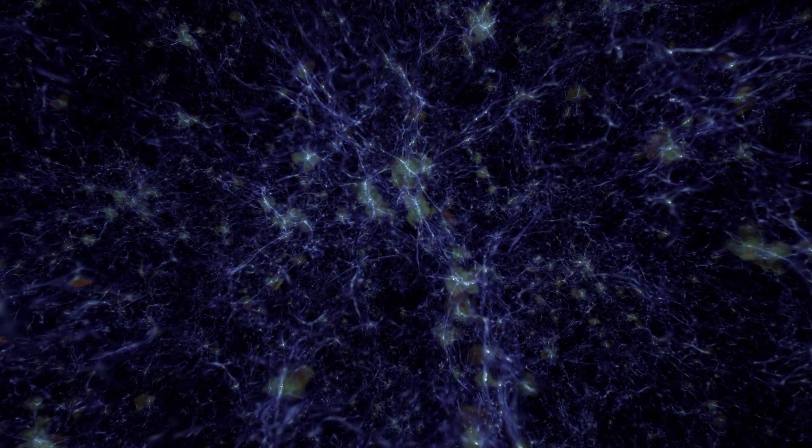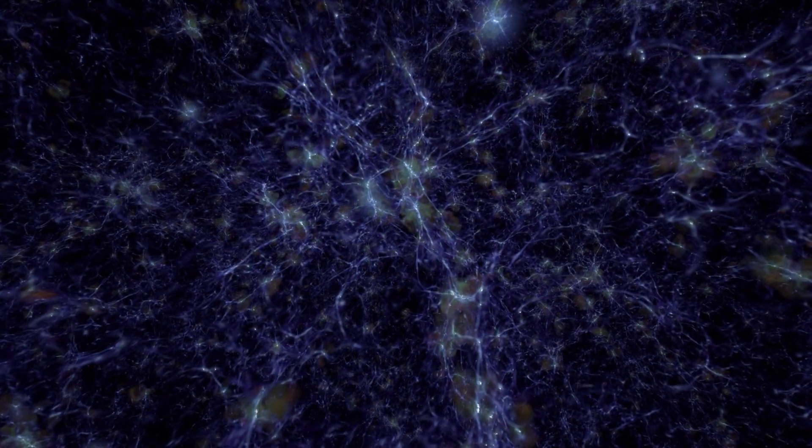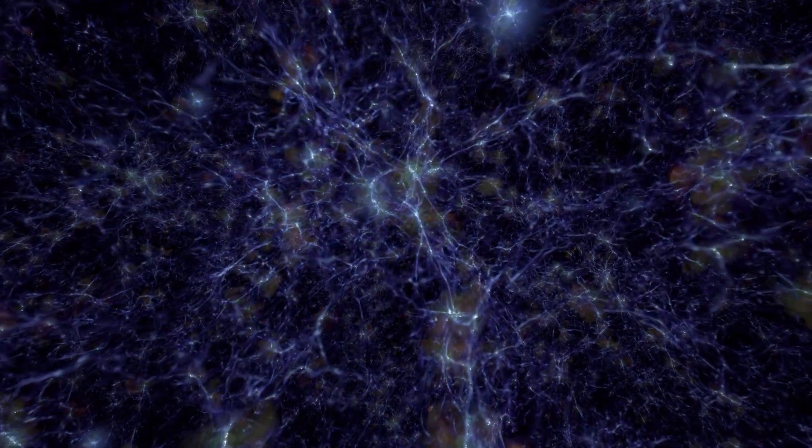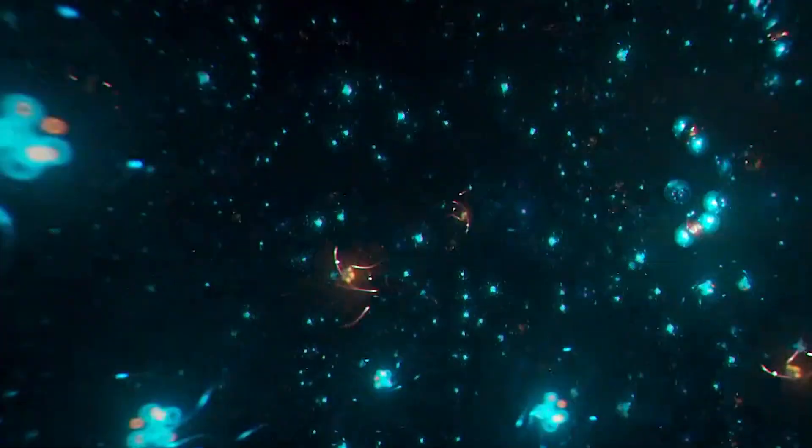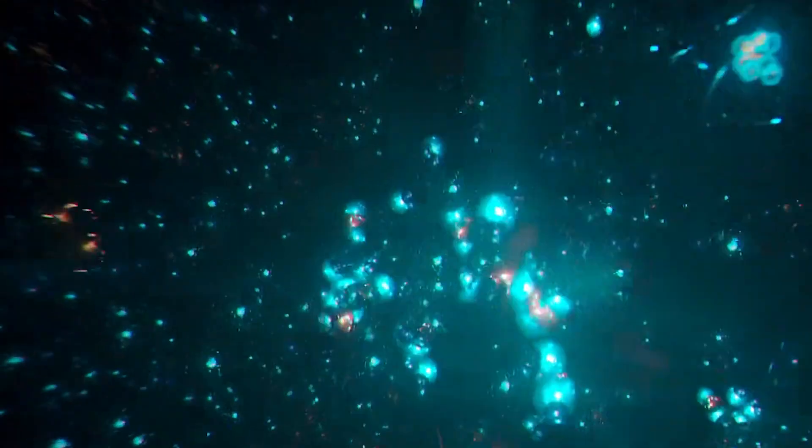In summary, dark matter, or dark gravity as we've proposed, is believed to be composed of subatomic particles with minimal interaction with ordinary matter. Within our own family of particles, like neutrinos, we already have examples of particles with weak or non-existent interactions.